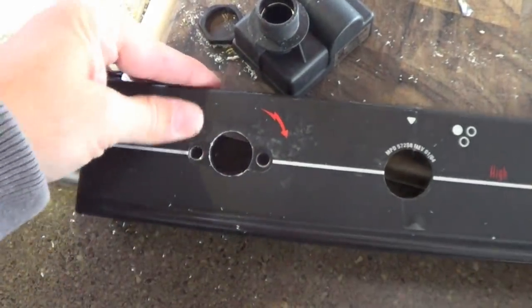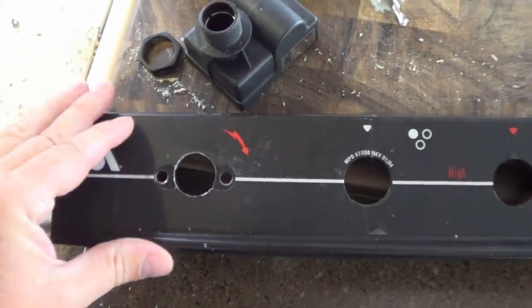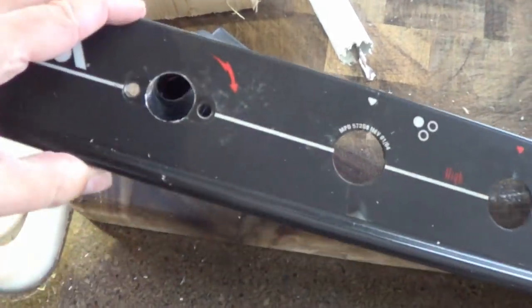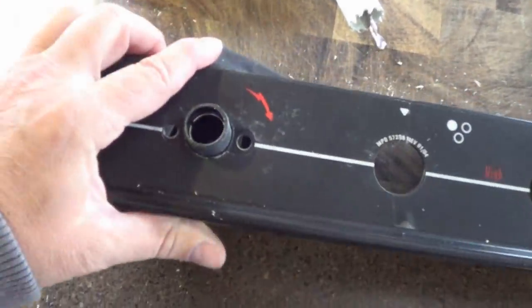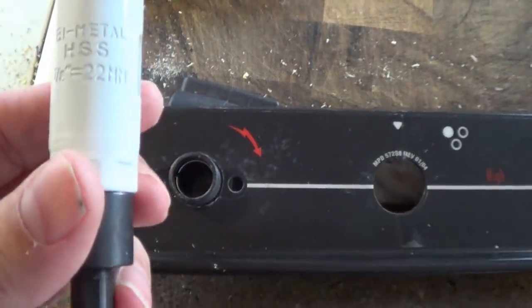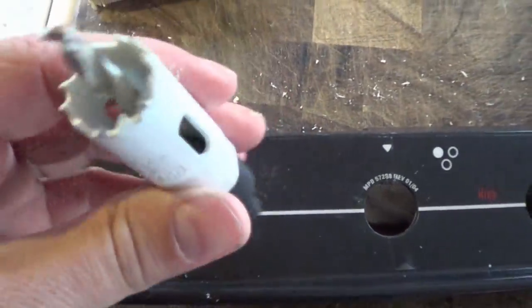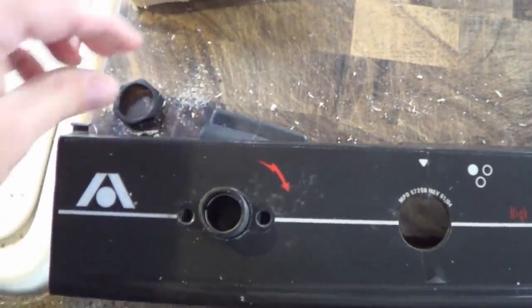Yeah, not too bad, that'll work. The knob will cover it up too. So let's just give her a try. Yeah, fits through there perfect. So that's a seven-eighths bi-metal hole saw there, worked pretty good.